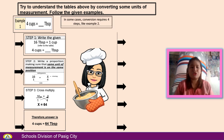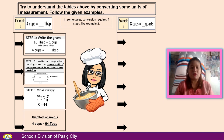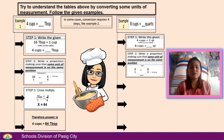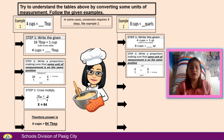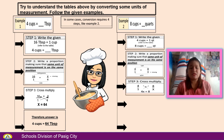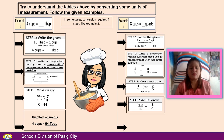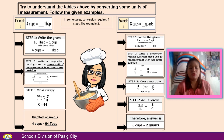In some cases, conversion requires 4 steps, like example number 2: 8 cups equals blank quarts. Step 1: Write the given — refer to the table, 4 cups equals 1 quart. Step 2: Write a proportion: 4 over 1 equals 8 over x. Step 3: Cross-multiply. 4 multiplied by x equals 4x. 8 multiplied by 1 equals 8. So 4x equals 8. Step 4: Divide. 4x divided by 4 equals x. 8 divided by 4 equals 2. Therefore, 8 cups equals 2 quarts.